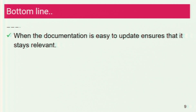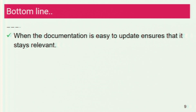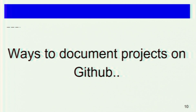When documentation is easy to update, it ensures it stays relevant. Merely having documentation is not sufficient. Having documentation on platforms such as GitHub — which provides facilities to track versions, compare versions, and facilitate easy editing — ensures our documentation stays up to date and relevant to all users associated with that project. Now that we know why it's important to document, let's look at different ways to document projects on GitHub.